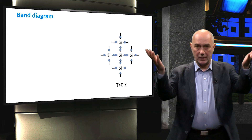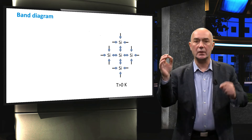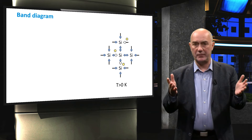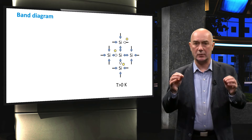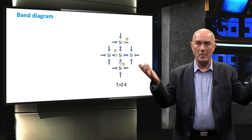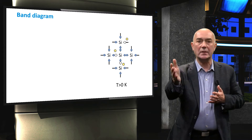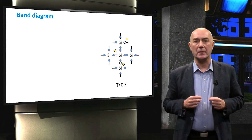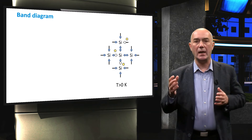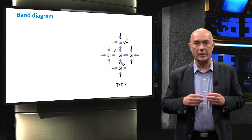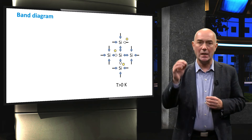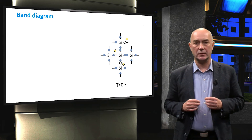However, at a temperature above absolute zero, thermal energy is supplied to the semiconductor and some of the valence electrons are released from the covalent bonds. These excited electrons are mobile and can move around in the material, allowing the semiconductor material to conduct electricity. The band diagram is a convenient way to express the energy state of a valence electron and is therefore a much used tool in semiconductor physics.